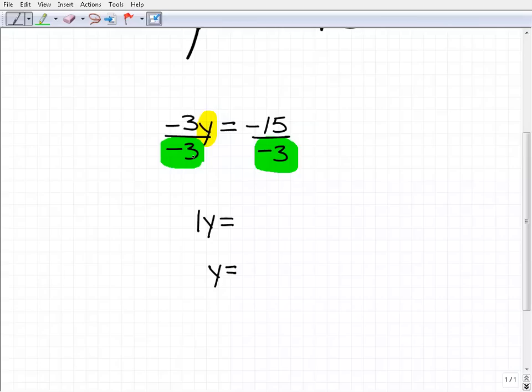-3y divided by -3 will give us 1y. And then we have -15 divided by -3. And of course you have to know your positive and negative number rules. If you don't know those, you're going to have a tough time doing these equations, but -15 divided by -3 is a positive 5. So our solution is y equals 5. You don't have to write the 1 in front of this y, but I want you to understand that's what that means. y equals 5 means 1y equals 5 and that is your solution.